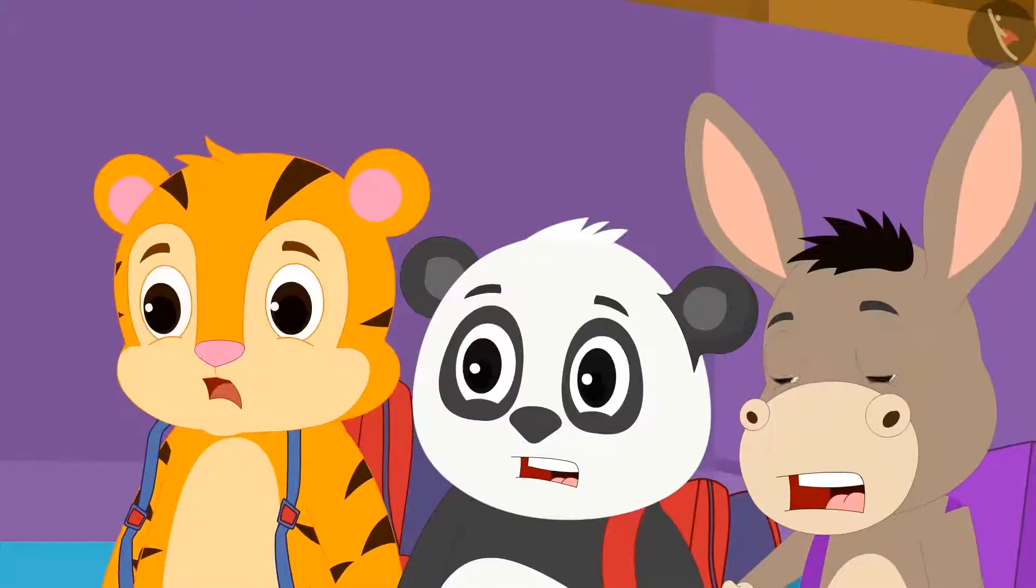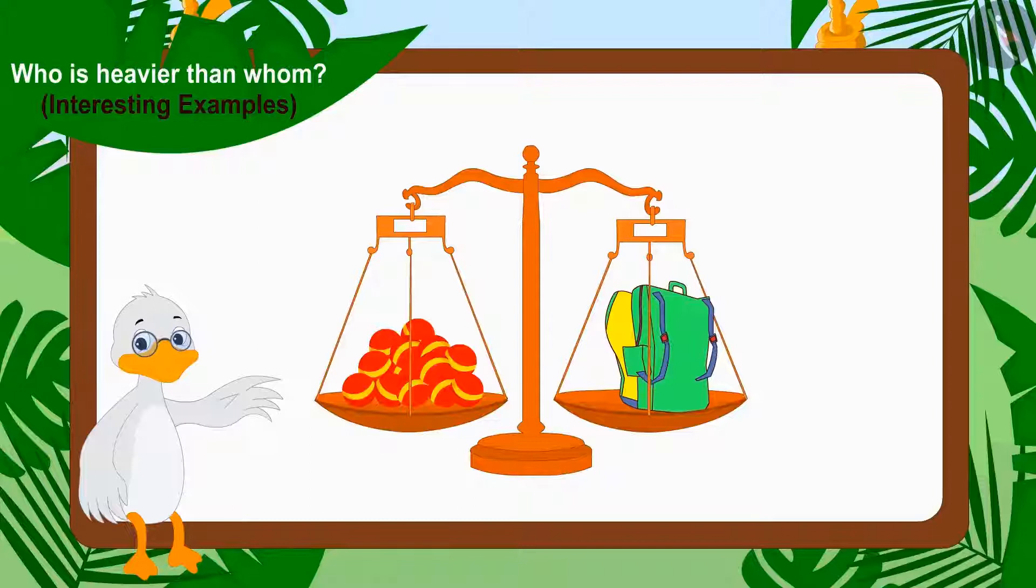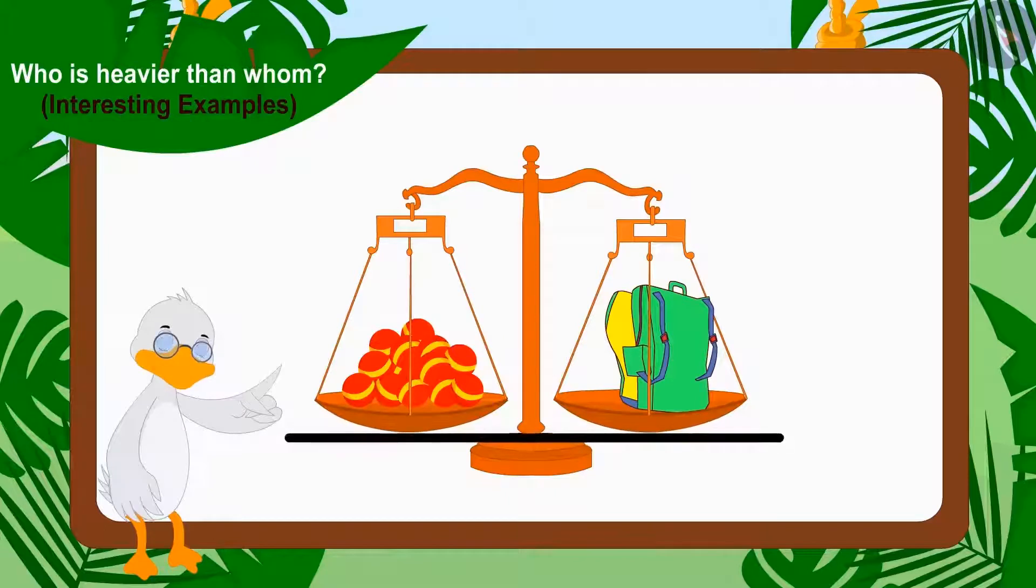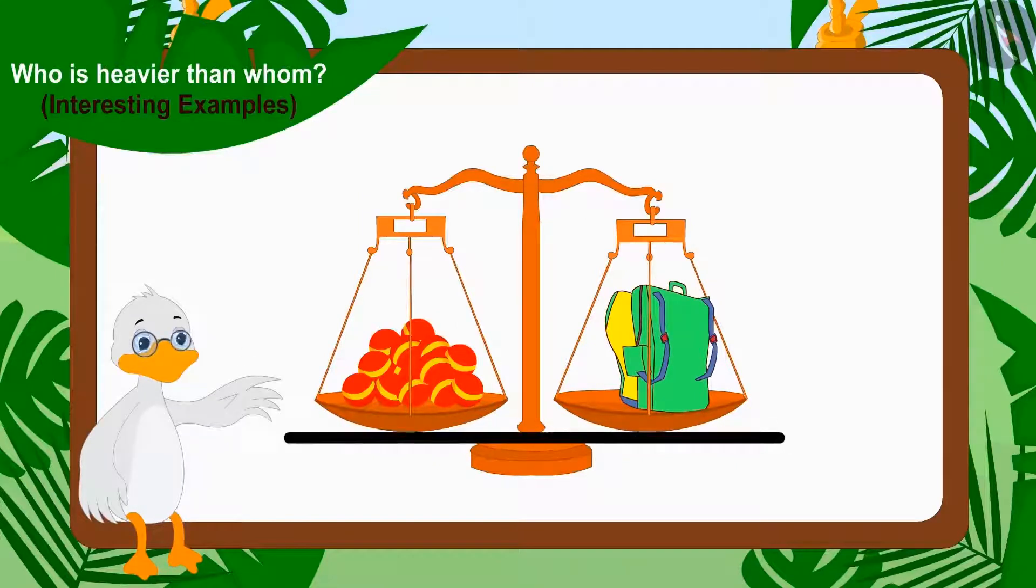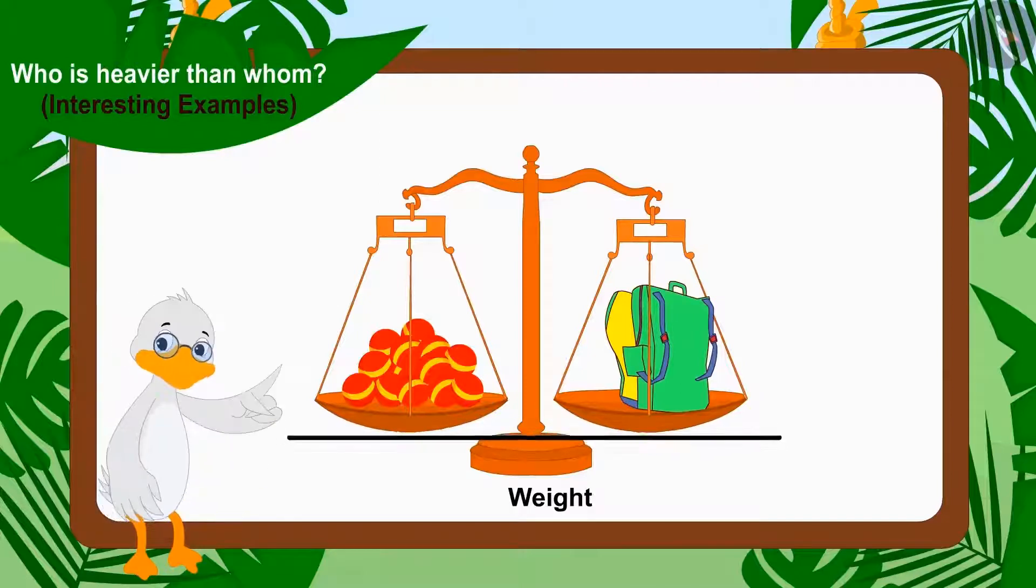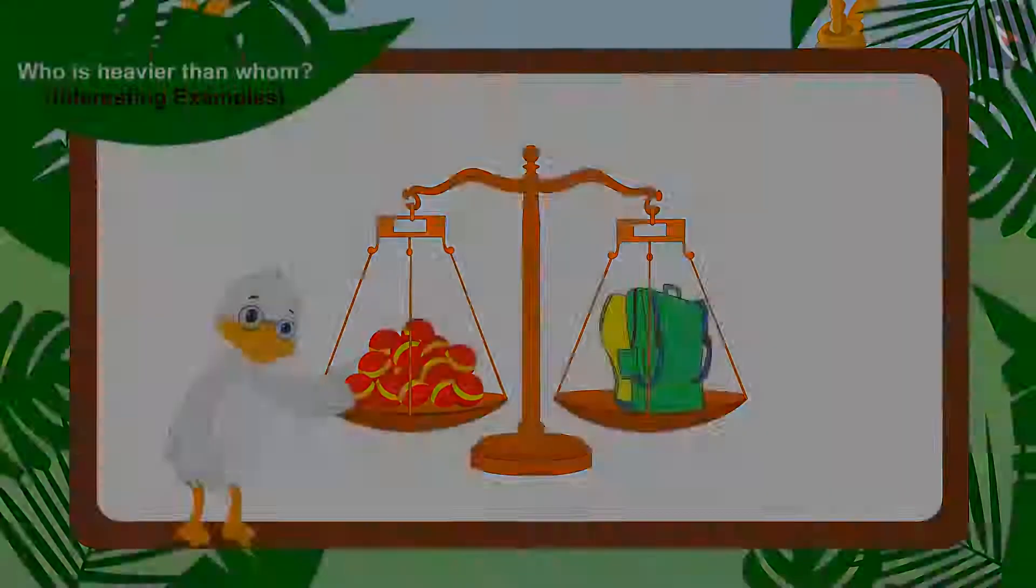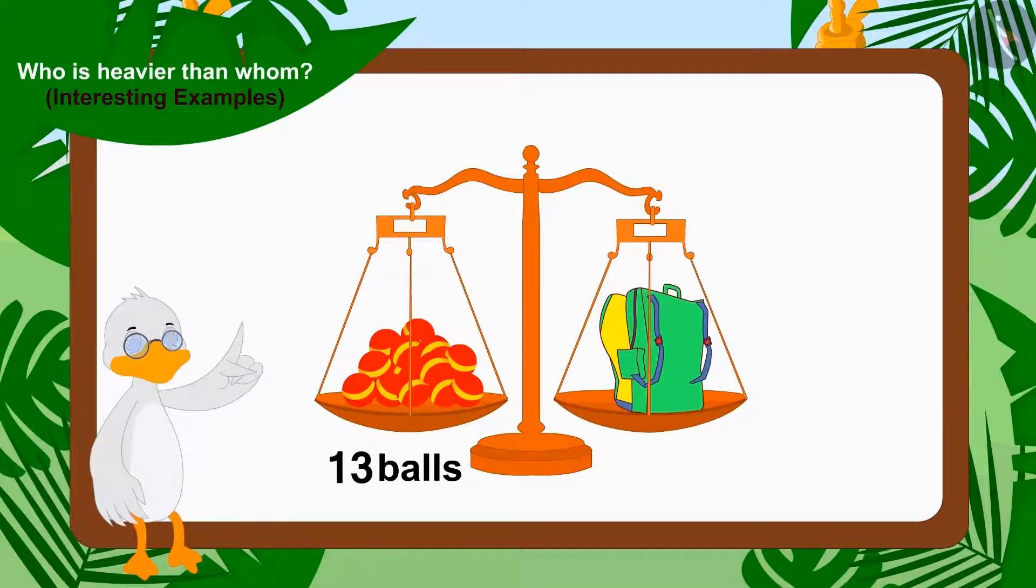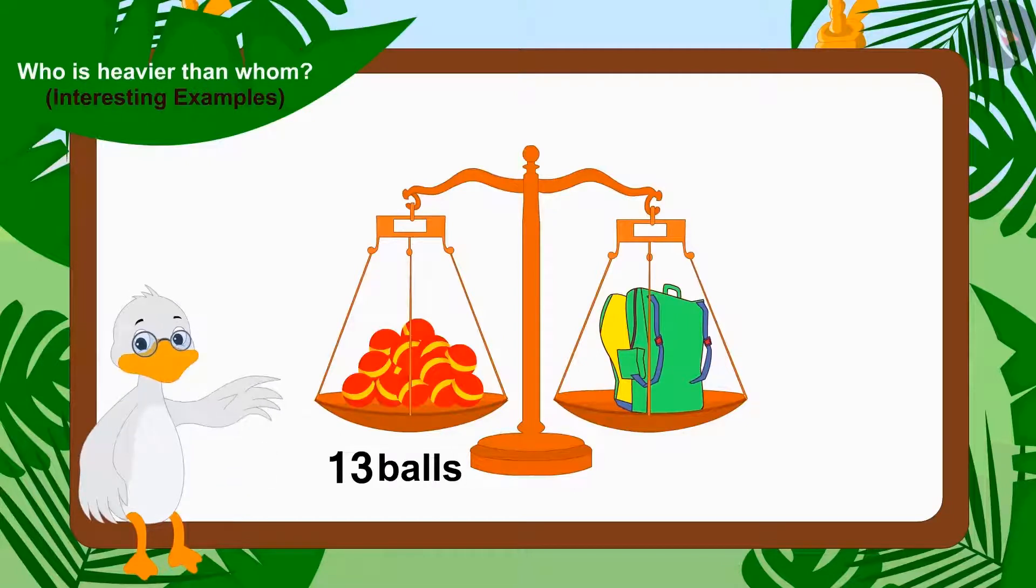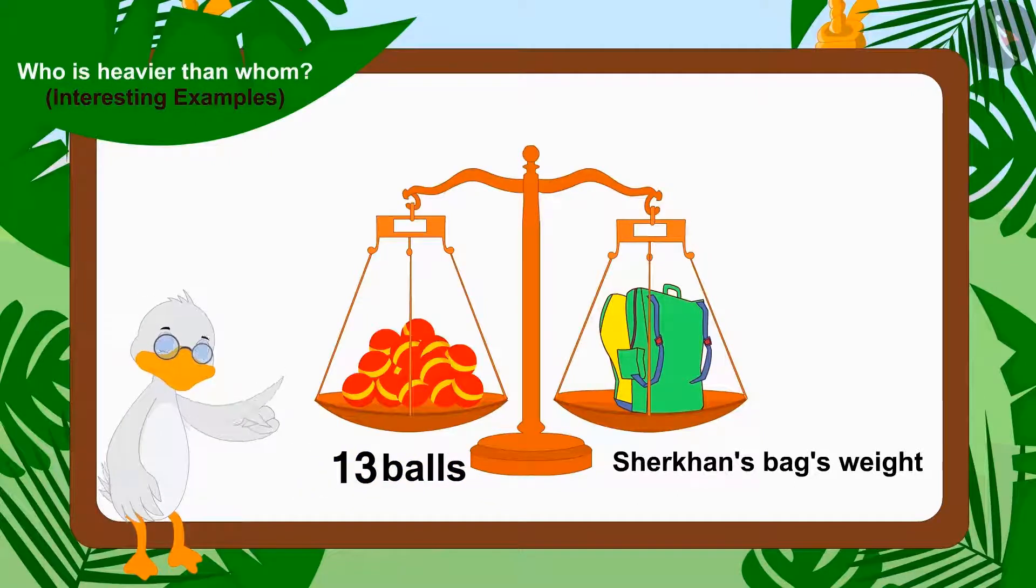The children could not understand anything. Uncle then explained to them that when the two plates of the scales are on the same level, it means that the weight of the objects in both plates is the same. When Uncle counted those balls, he found that there were thirteen balls in the plate. Do you know what this means? It means that the weight of thirteen balls equals Sher Khan's bag's weight.